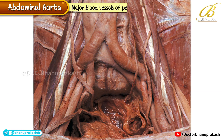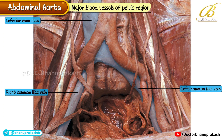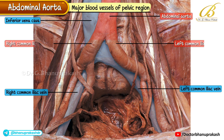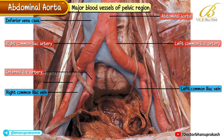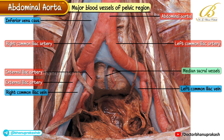The image shows the major blood vessels of the pelvic region. The inferior vena cava is formed by the confluence of the right and left common iliac veins. The abdominal aorta ends by dividing into the right and left common iliac arteries, each of which further divides into the internal and external iliac arteries on either side. Between the bifurcation of the aorta and the formation of the inferior vena cava, the median sacral vessels are visible.